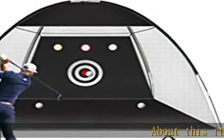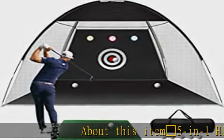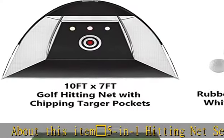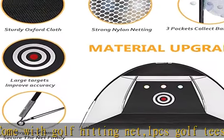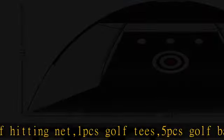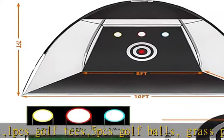About this item: Flag in Hole 5-in-1 hitting net set comes with golf hitting net, one piece golf tees, five pieces golf balls, grass pad, and carry case. The practice net features one large target and three chipping target pockets to practice your skills like swing, hitting, and chipping.